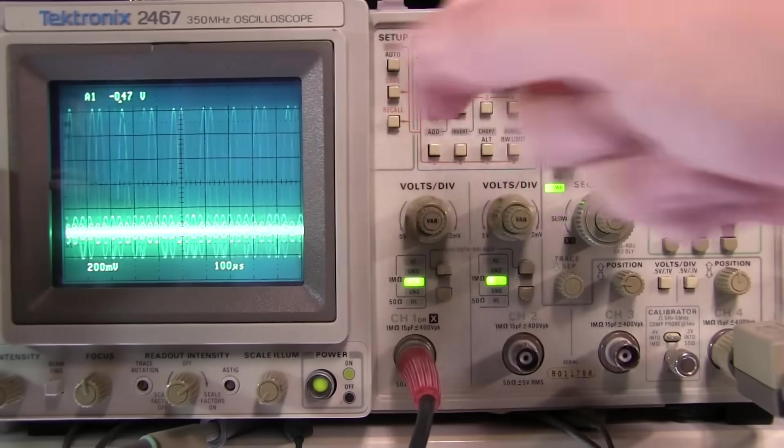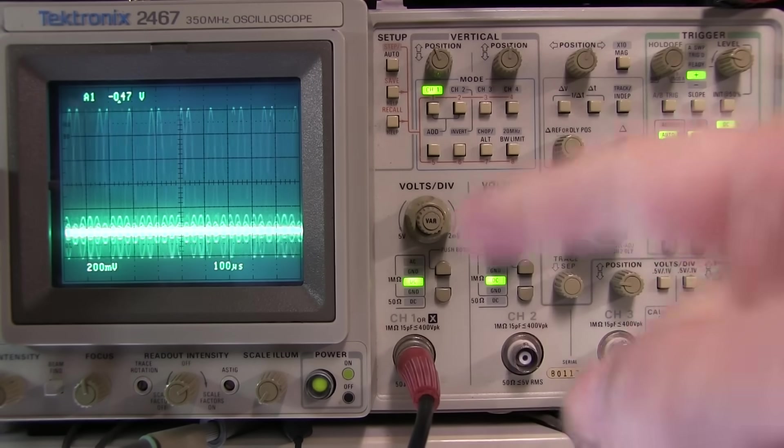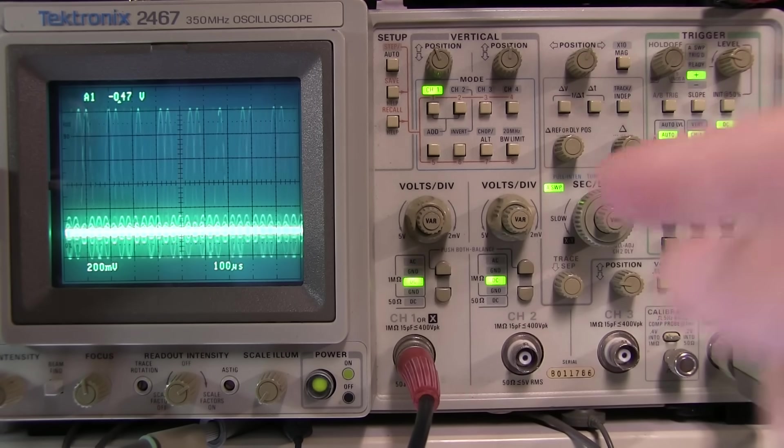Why can't I get a stable waveform on my oscilloscope? I bet it has something to do with triggering.